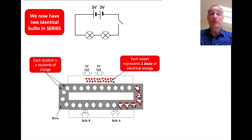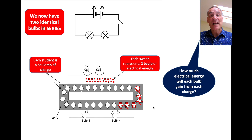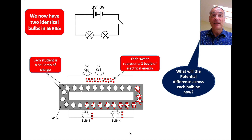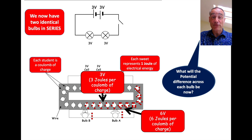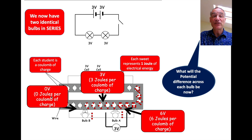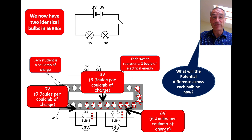If we add two identical bulbs in series, how can we use this model to explain what happens to voltage? Each bulb will gain three joules of energy - they share the energy equally. So looking at the potentials: we've got a potential of six here, and a potential of three here - three joules per charge. The potential difference across the first bulb is therefore six minus three, which is three volts. If the potential here is zero volts, the potential difference across the second bulb is three minus zero, which is three volts. The potential differences add up to the supply voltage of six.